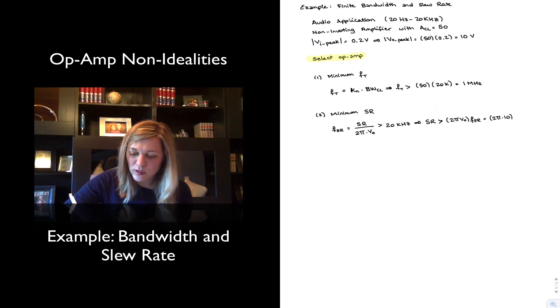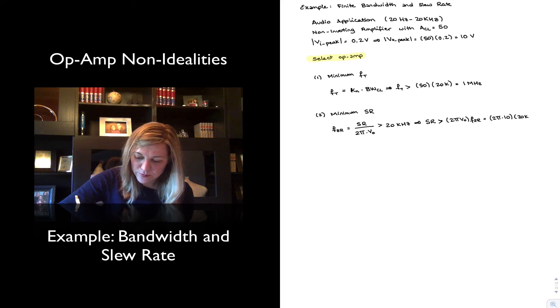I calculated earlier the Vout maximum times 20k, and it gives me a slew rate of 1.25 times 10 to the 6 volts per second, or what's equivalent 1.25 volts per microsecond. So this will be my minimum fT and my minimum slew rate.